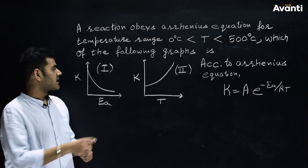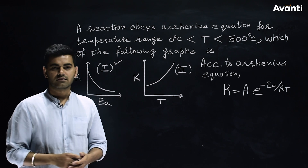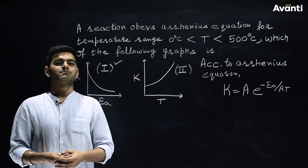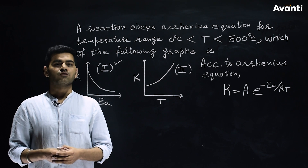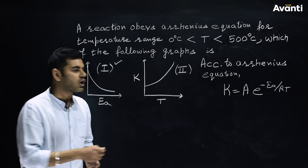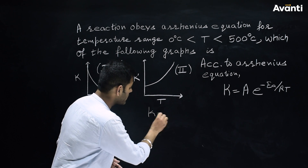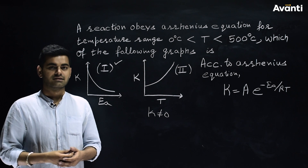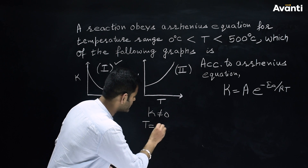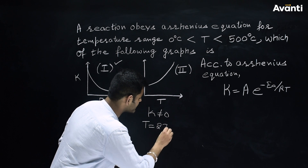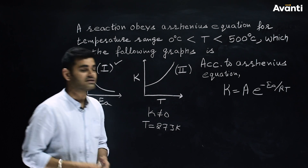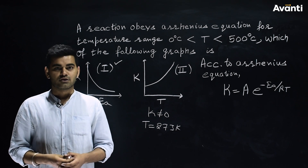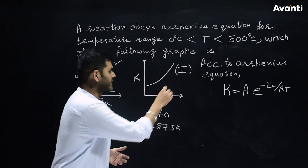The value of rate constant decreases exponentially with respect to Ea, so graph 1 is correct. The value of K increases with respect to temperature, but K cannot equal 0 because for 0°C, temperature equals 273 Kelvin, and in this equation temperature must always be in Kelvin. So graph 2 is also correct.